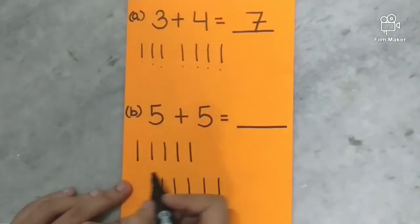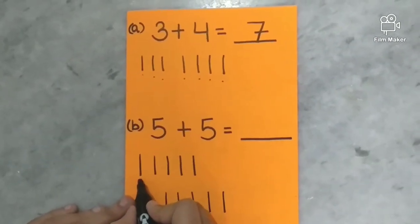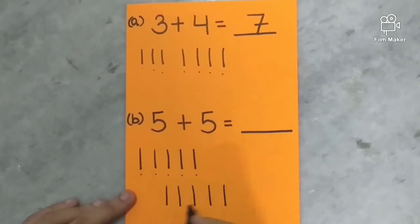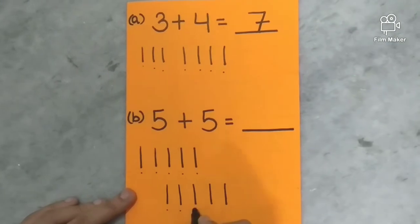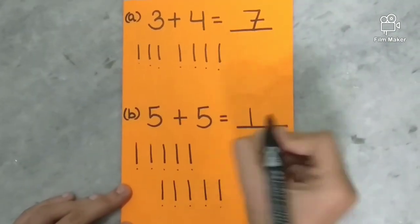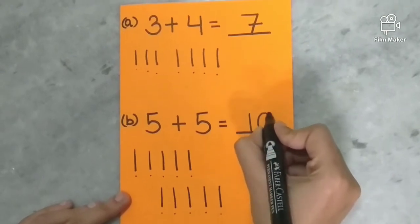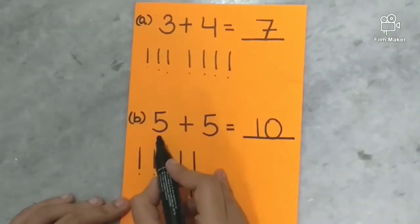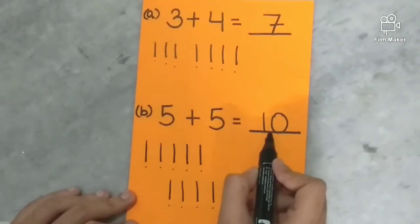Now count all the lines. One, two, three, four, five, six, seven, eight, nine, ten. So how many lines we have in all? Yes, ten. Very good. Which means five plus five is equal to ten.